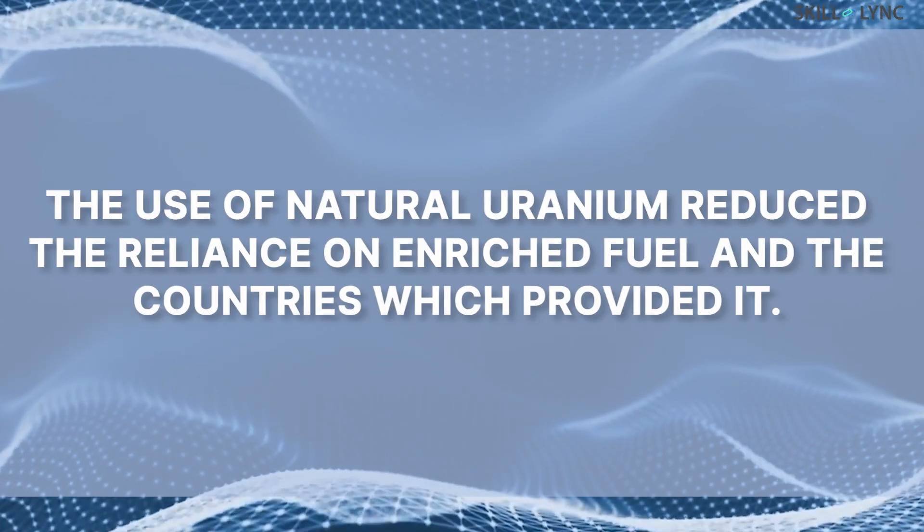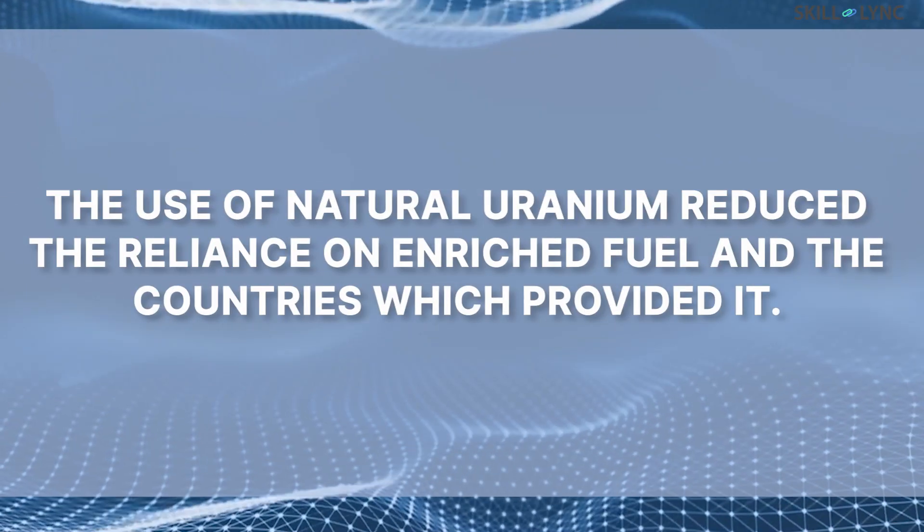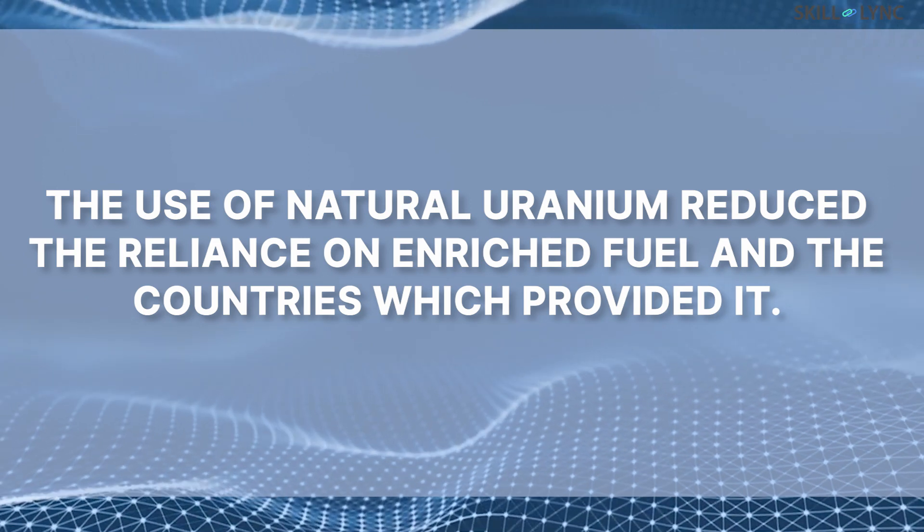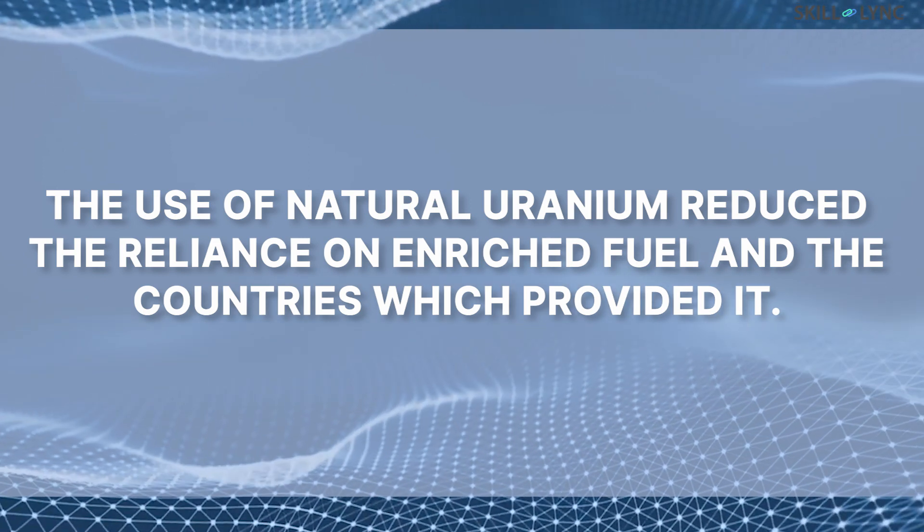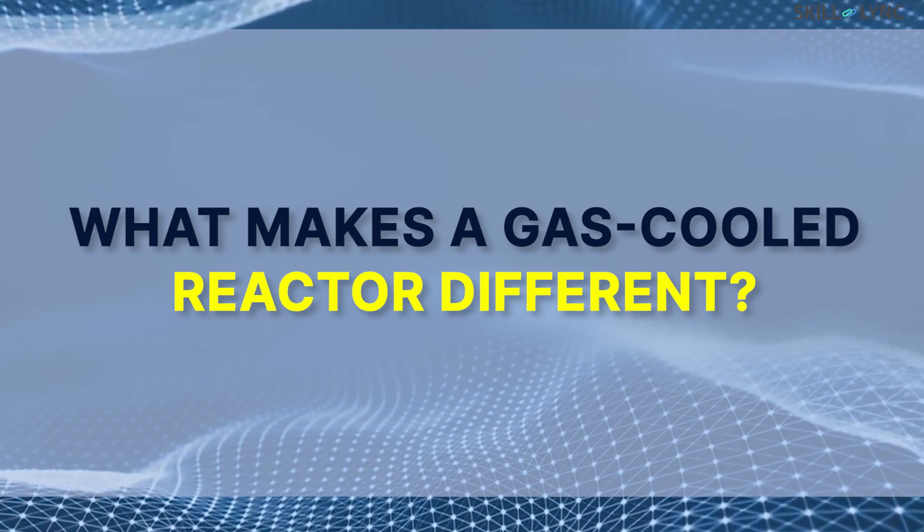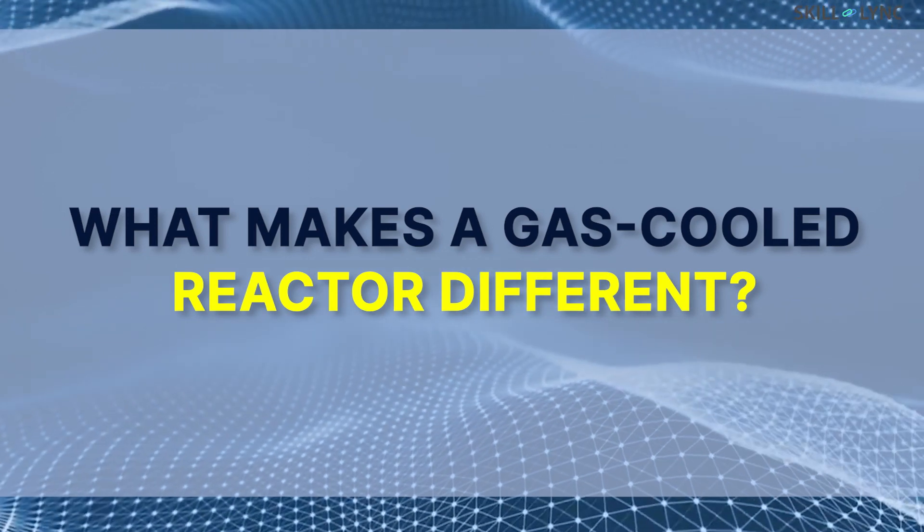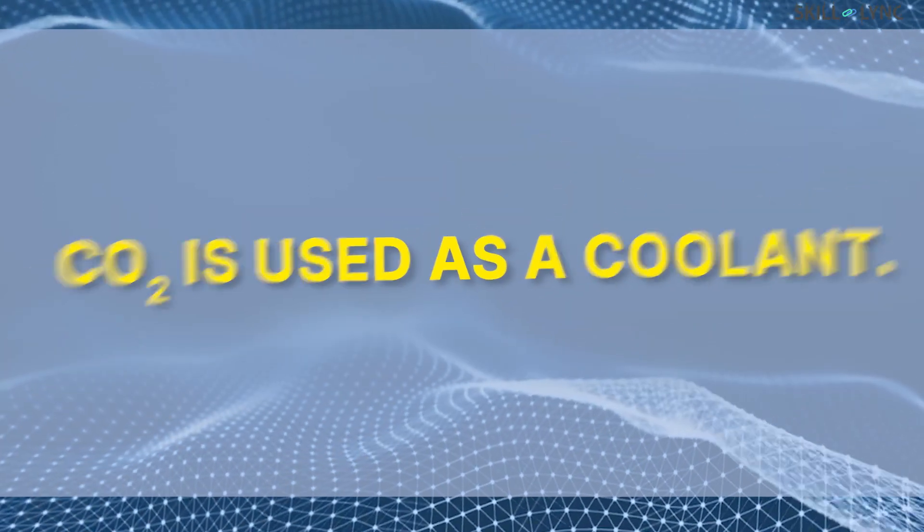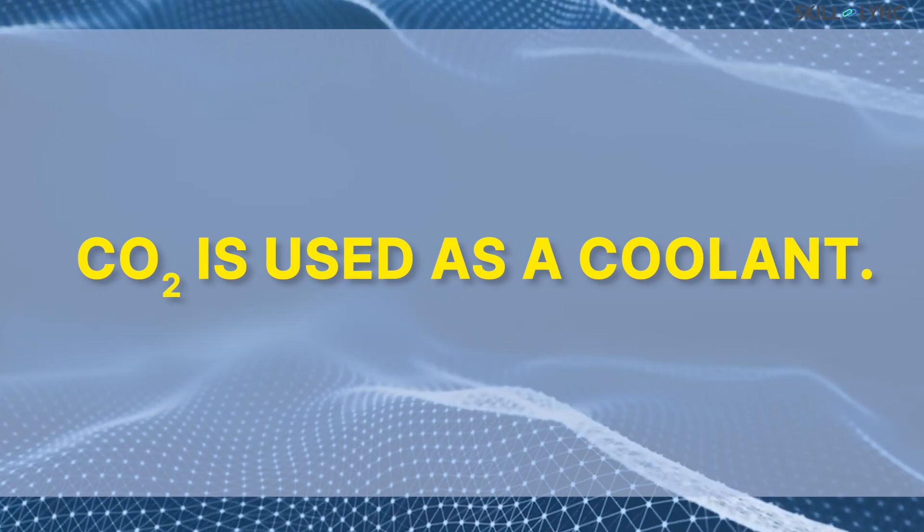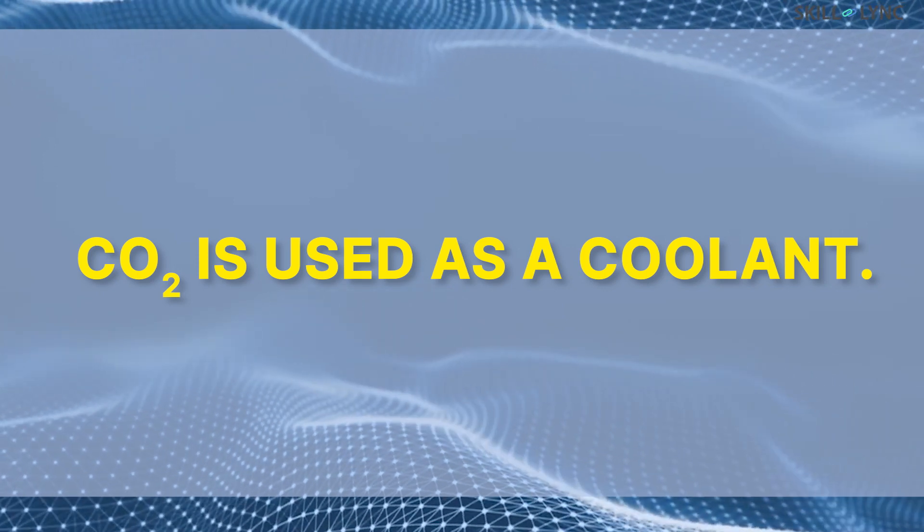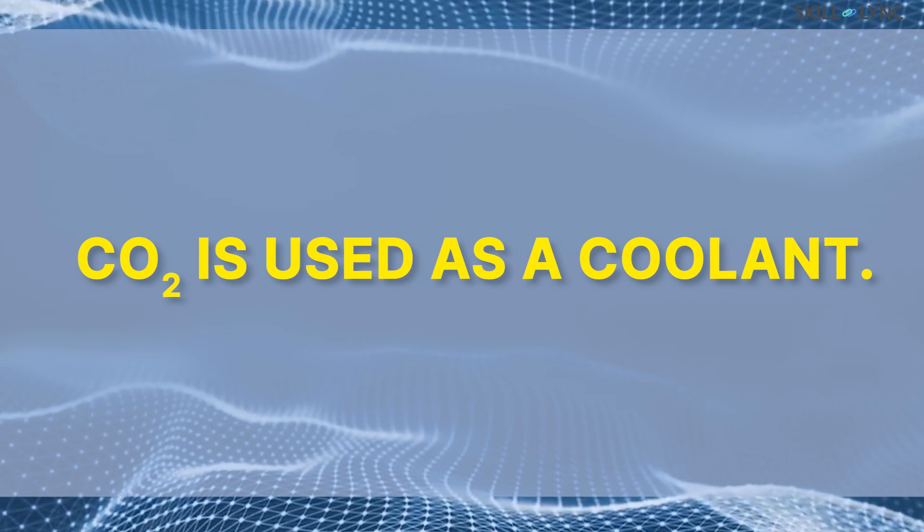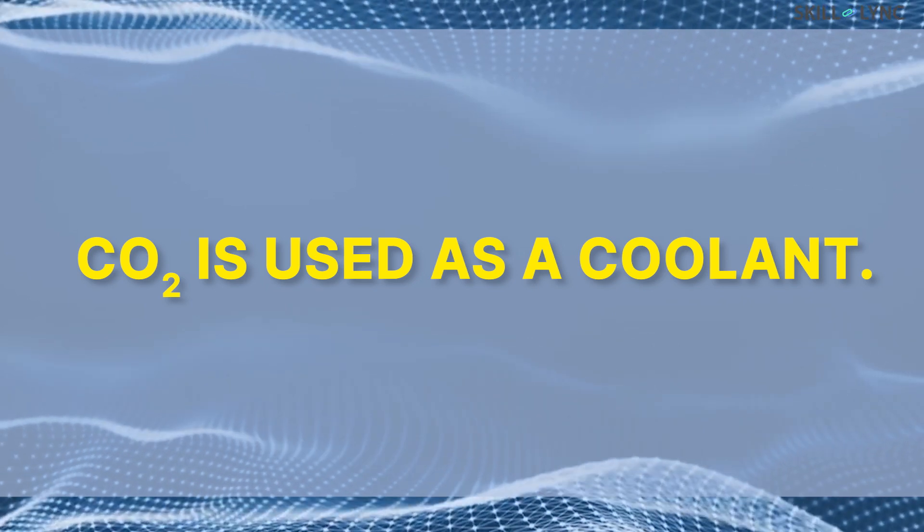Originally, the gas cooled reactors were designed to use natural uranium as fuel, thus the dependency on enriched fuel was eliminated. Let's see what makes gas cooled reactors different from other types of reactors. Gas cooled reactors, as the name suggests, employ a gas as a coolant. Carbon dioxide is used as a coolant in these reactors.